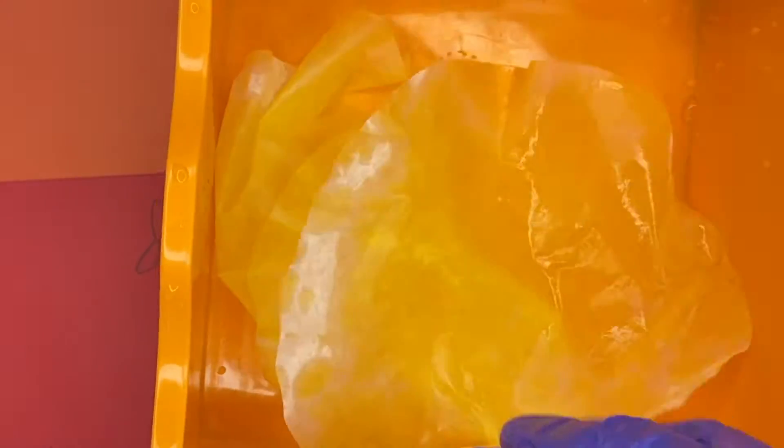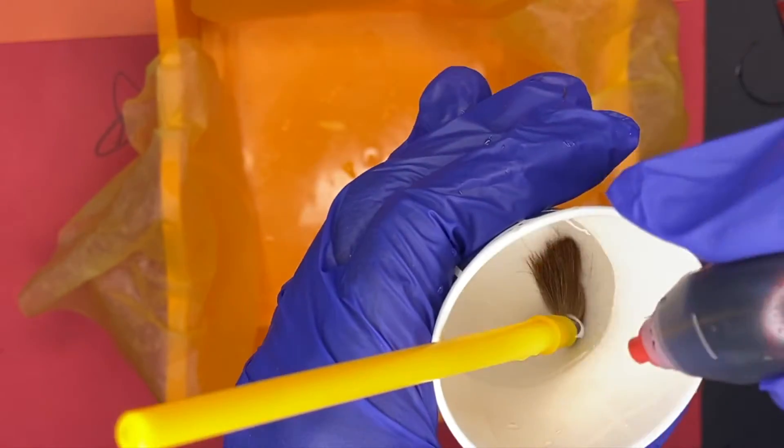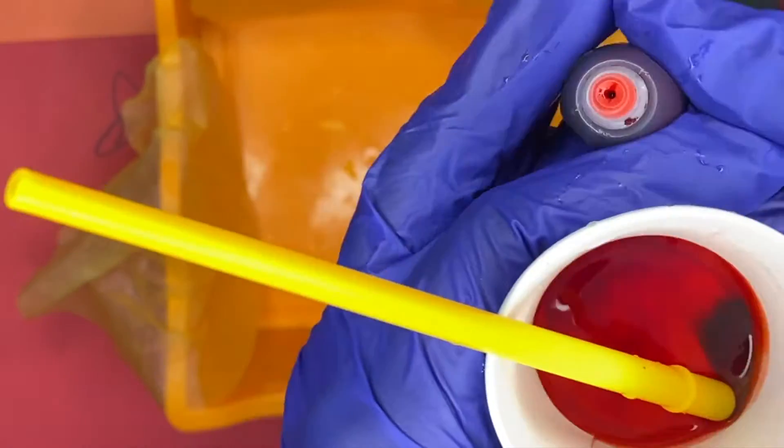Now once you've filled your coffee filter with that orange color, go ahead and go back over it with red if you would like. This is just an optional thing that I did. But just go ahead and put three to four drops of red now by itself.